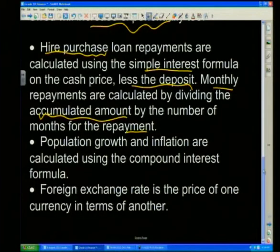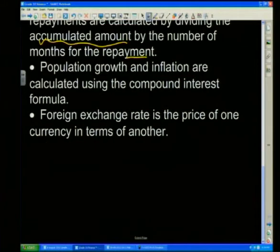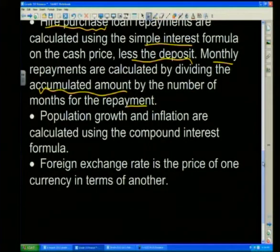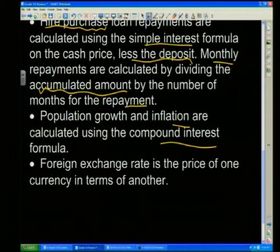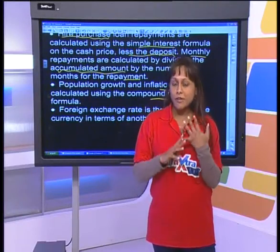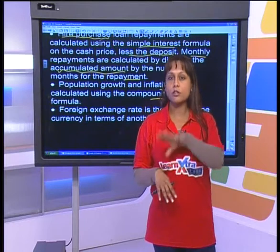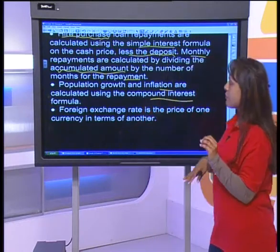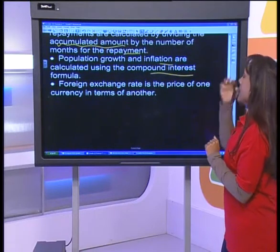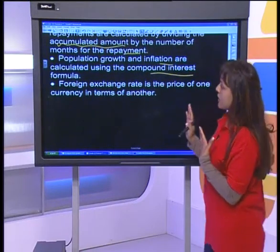This will make more sense when we do a few examples. Population growth and inflation are calculated using the compound interest formula. So, for hire purchase we use simple interest; for inflation or population growth we use the compound interest formula. Those are the two main concepts we're looking at today.